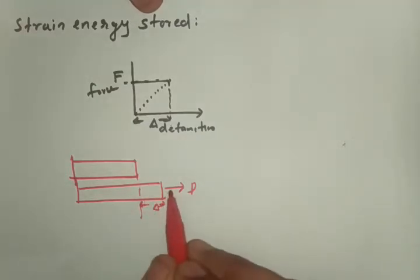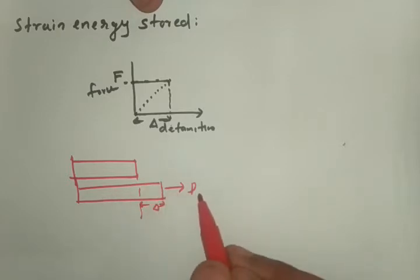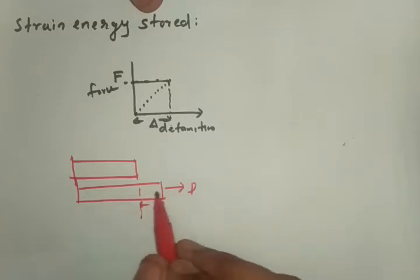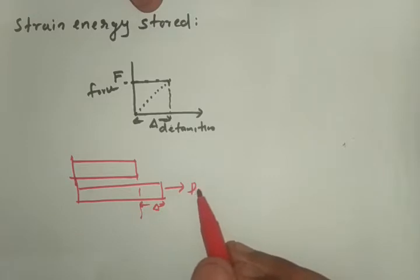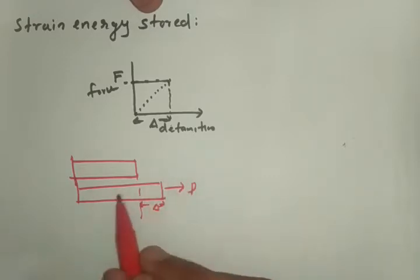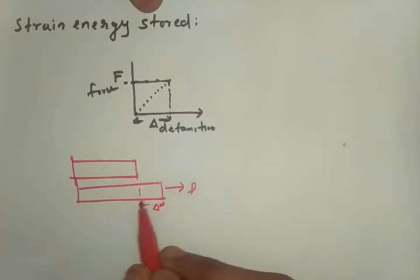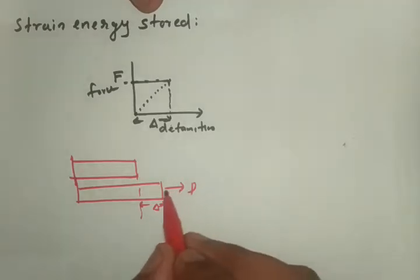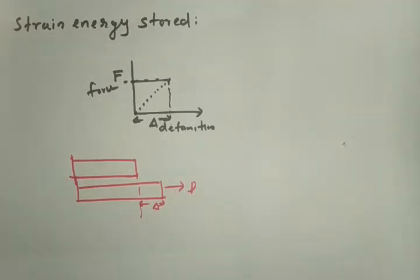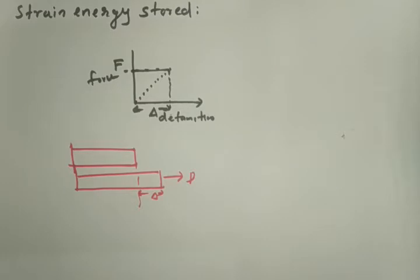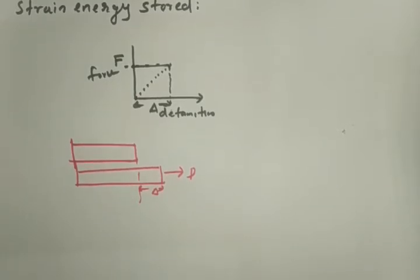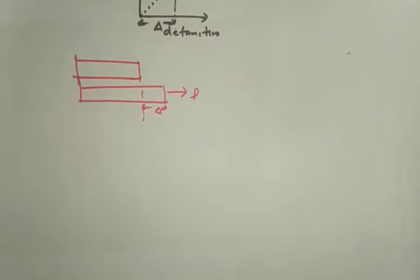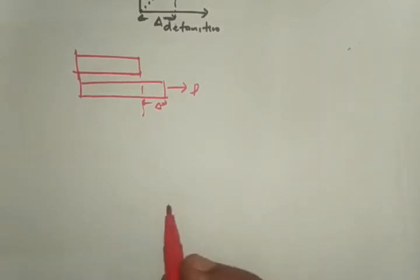Since this is an elastic body, when you remove the force it will return to its original position. But it cannot return without any energy — some energy has to be stored by the body through deforming to another shape. By applying a force of P, the bar stores some energy, and that energy is called strain energy. We now need to find out what that strain energy is.